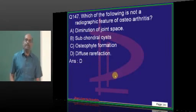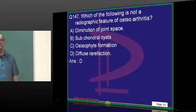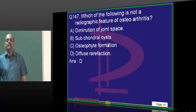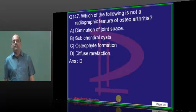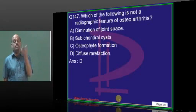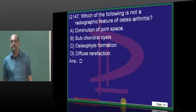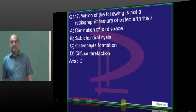In osteoarthritis, you do not find diffuse rarefaction — that is not a feature of degenerative arthritis. Periarticular osteoporosis is a feature of inflammatory arthritis.